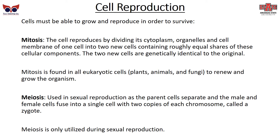Then we have meiosis, used in sexual reproduction, where parent cells separate and the male and female cells fuse into a single cell with two copies of each chromosome — this is called a zygote. Meiosis is only utilized during sexual reproduction. A human baby has a combination of their parents' genetic material through meiosis, and then as the baby continues to grow and make copies of its own cells, that's mitosis.